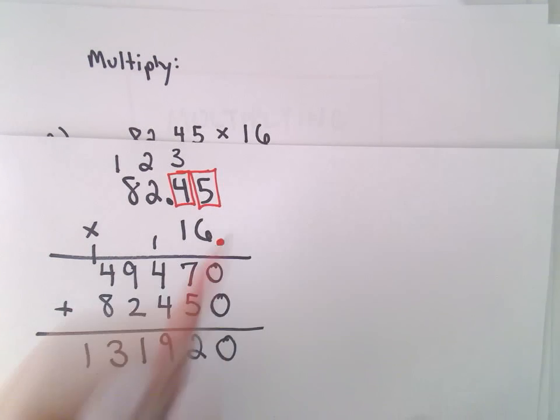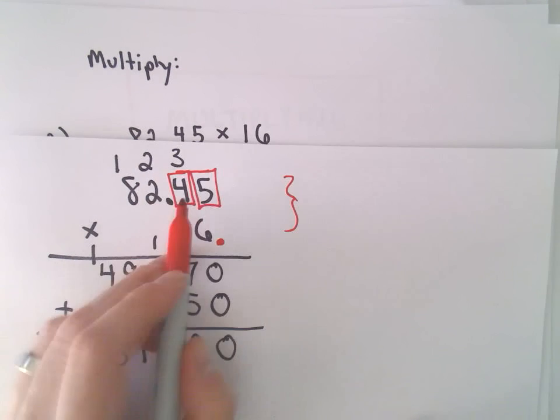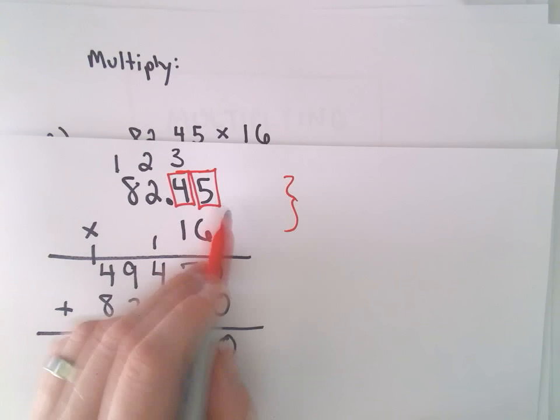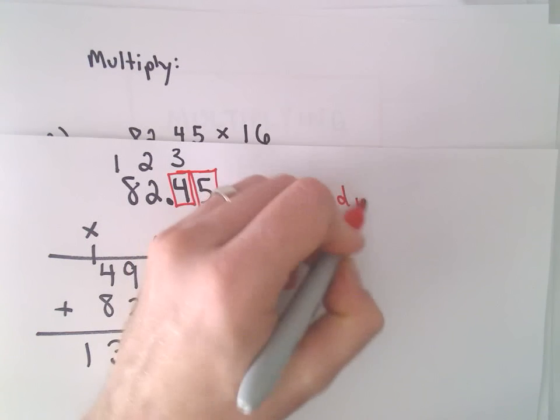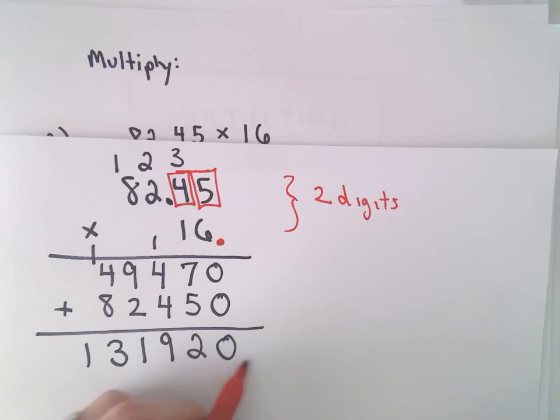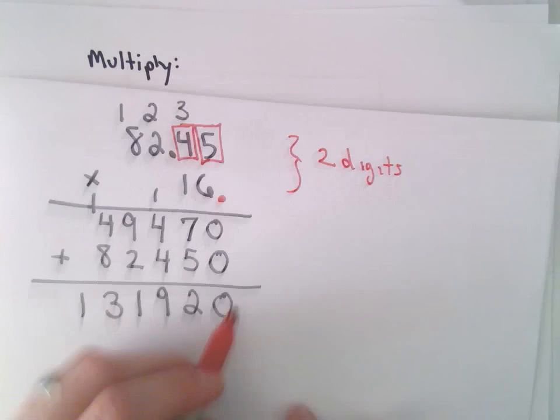You could think about adding in a decimal sign. Well, there's really no digits to the right of our second number, 16. So I count up the total number of digits that are to the right. So in this case, there's only two digits. It says that's how many places we move our decimal sign at the end.